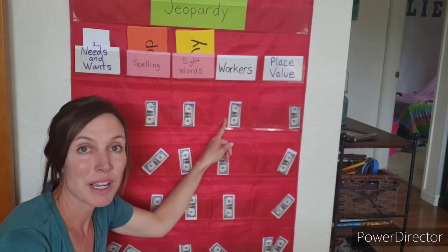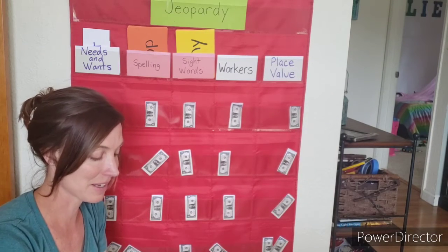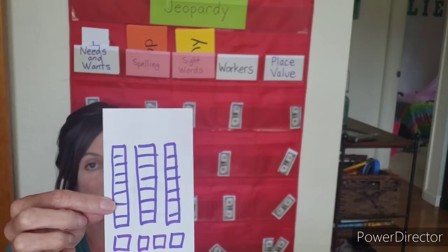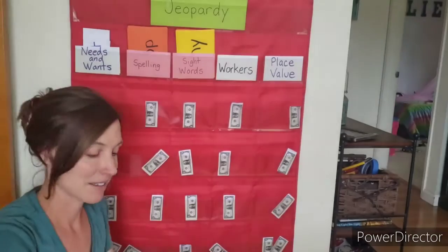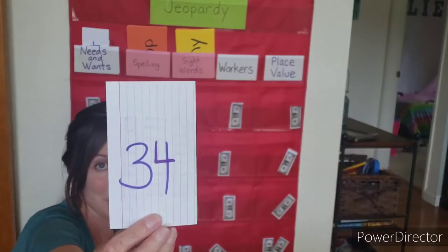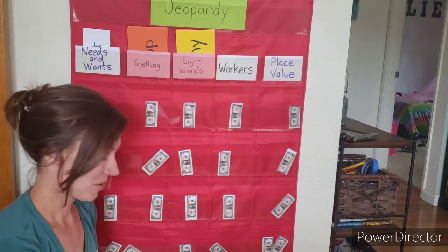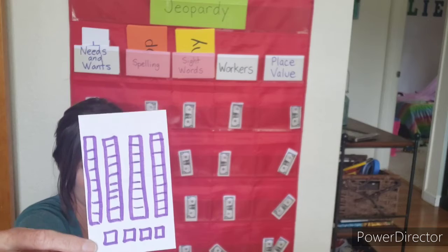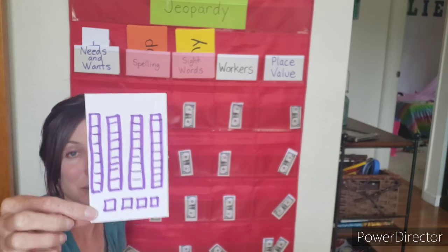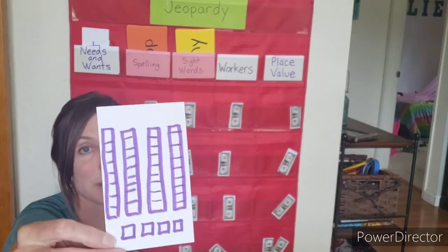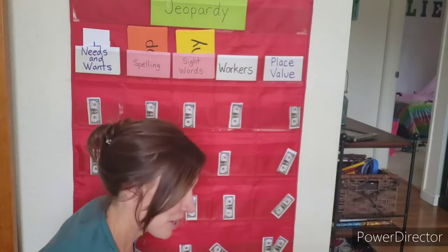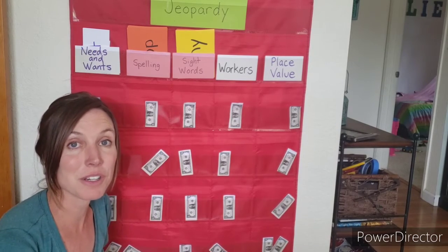Just like in class, I give you a dollar if you get it right — at home, just give yourself one tally mark, that means one dollar. Next one: it has three tens and four ones. Did you write 34? Good. The next one has four tens and four ones, so remember count 10, 20, 30, 40 and then count by ones. Did you get 44? Good job! If you got all of those right you should have four points.